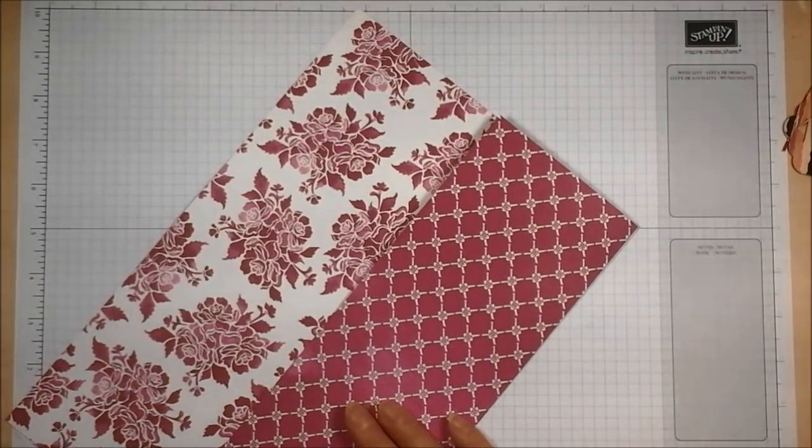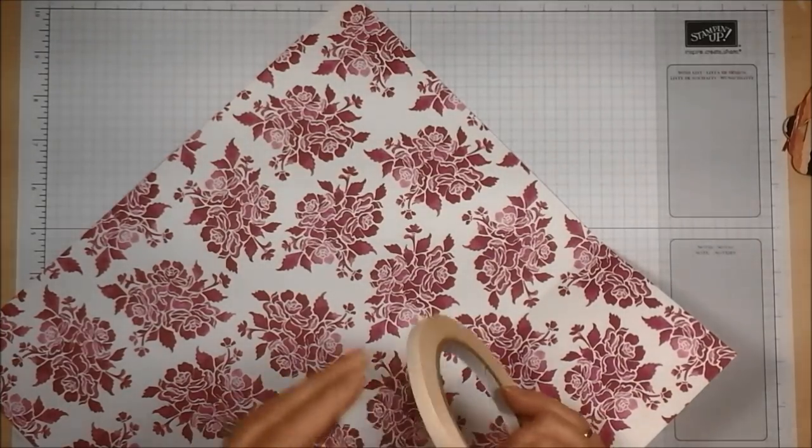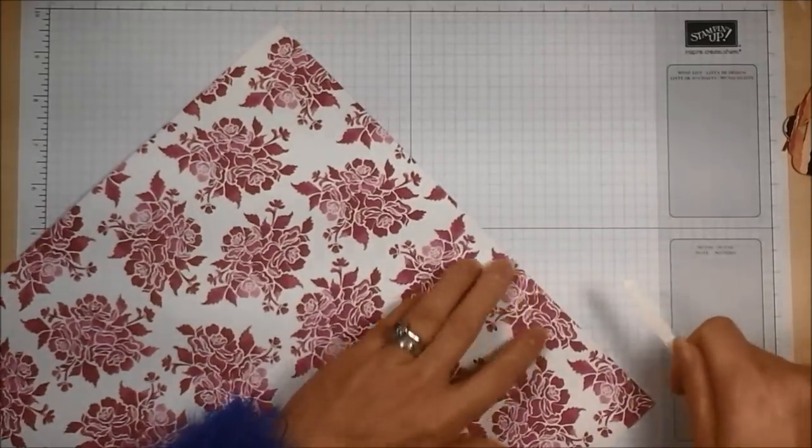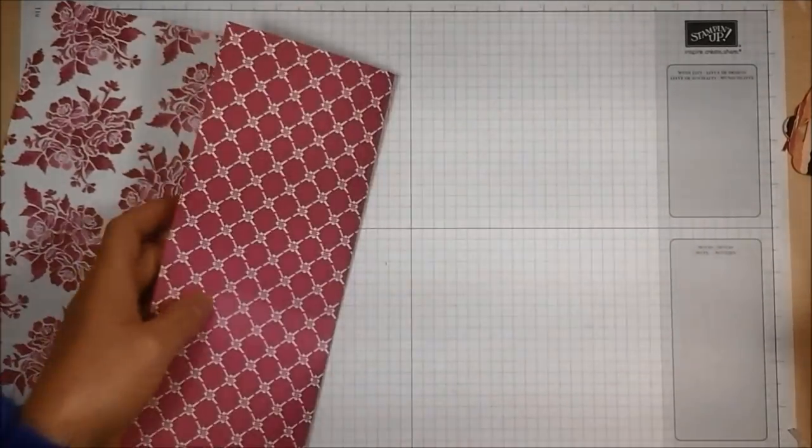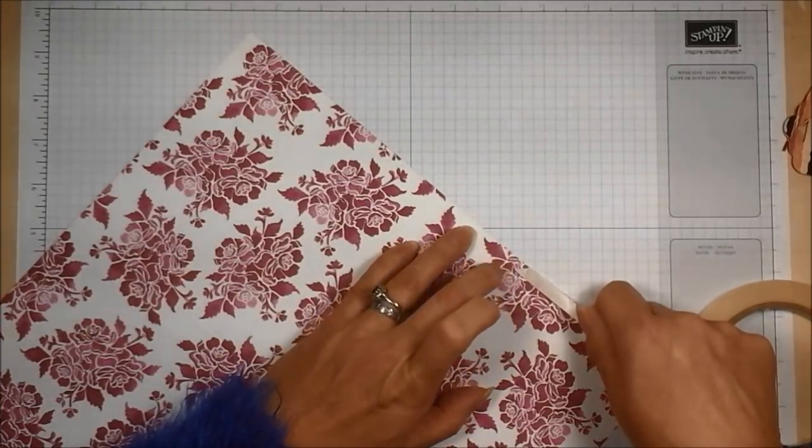I'm going to bring some tear and tape in and I have the four inch fold done. So I'm going to put some tear and tape on the very edge up to that four inch fold and bring it down.